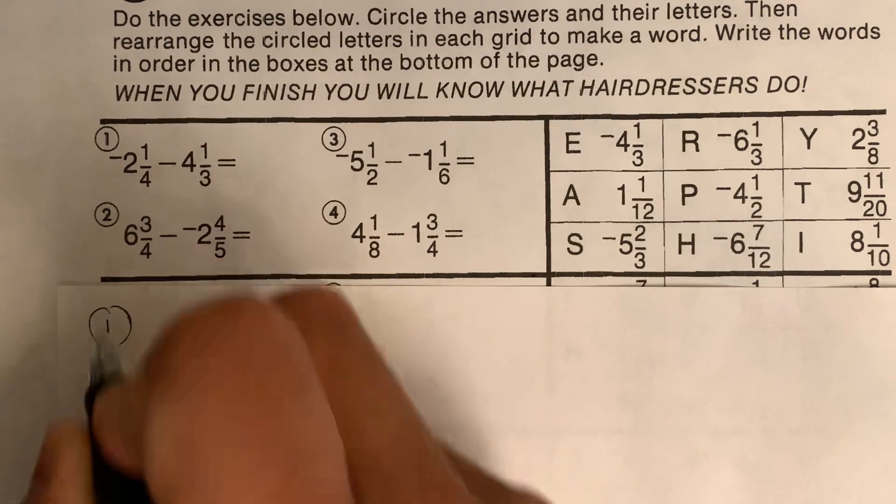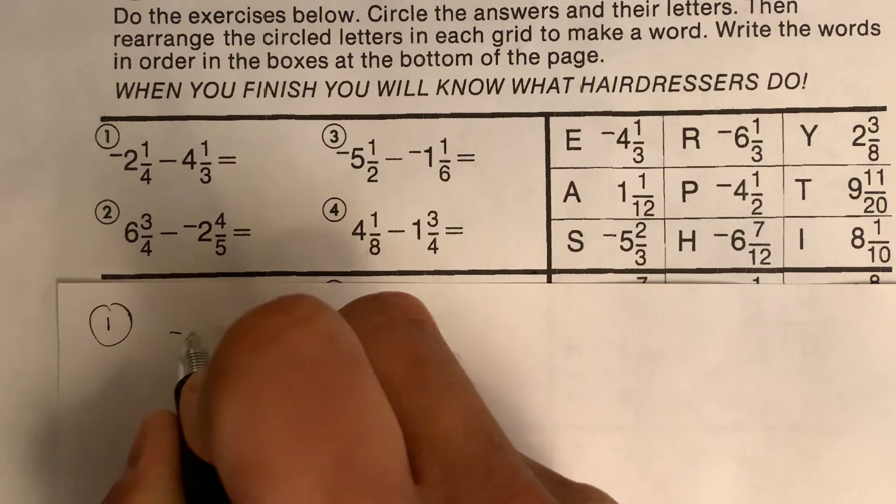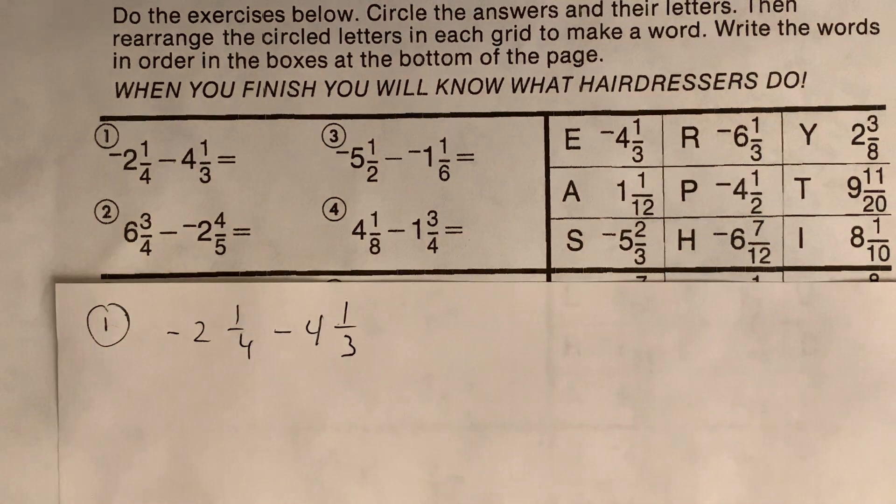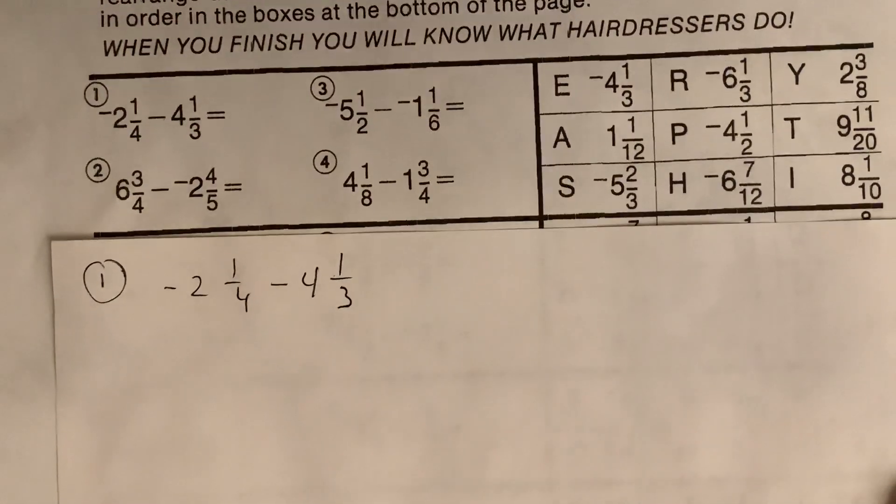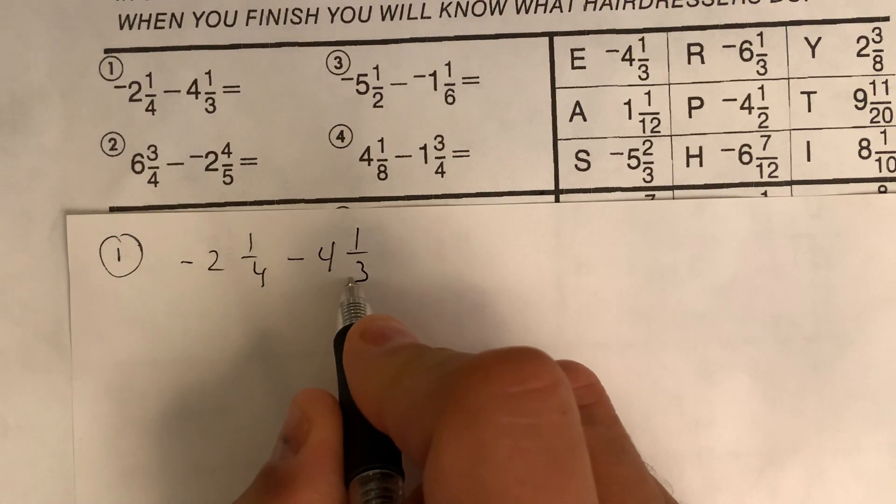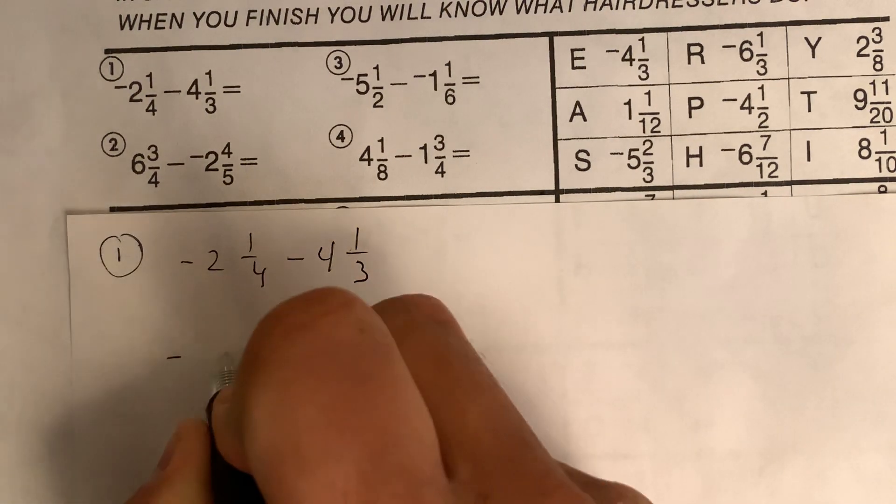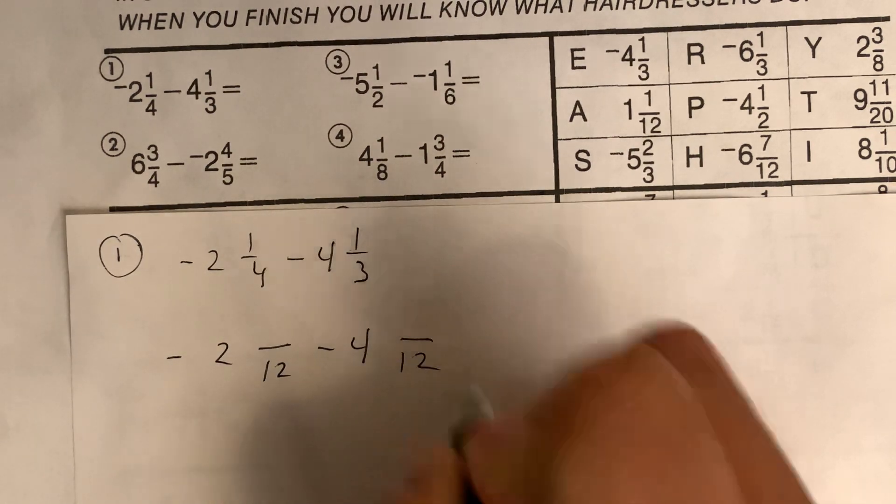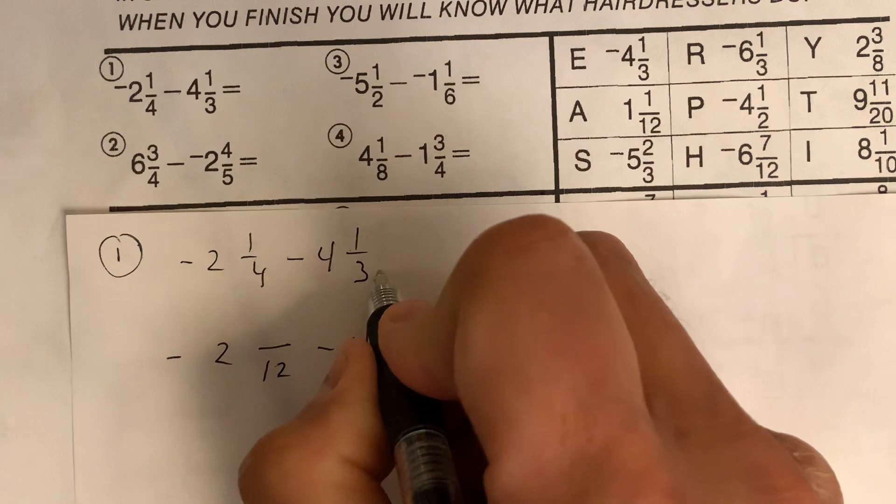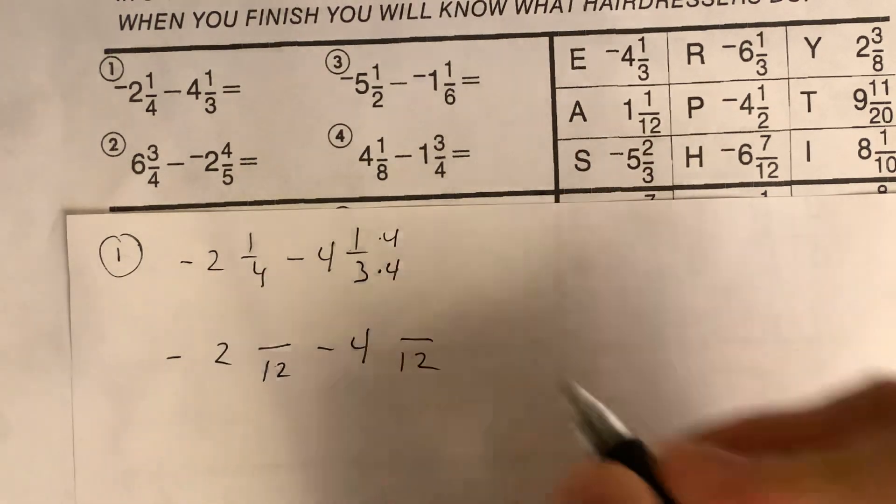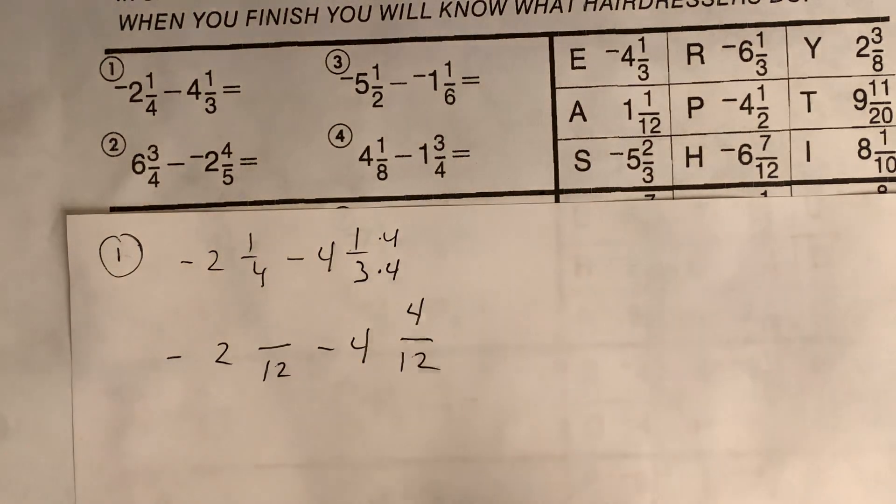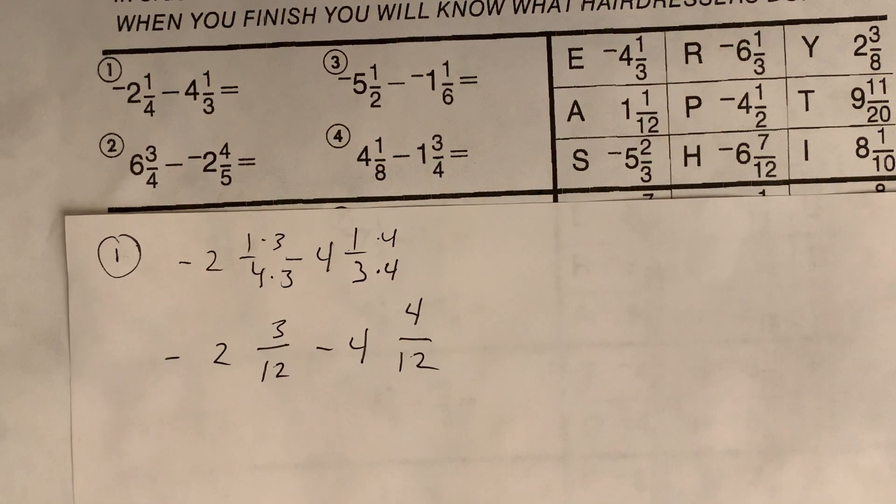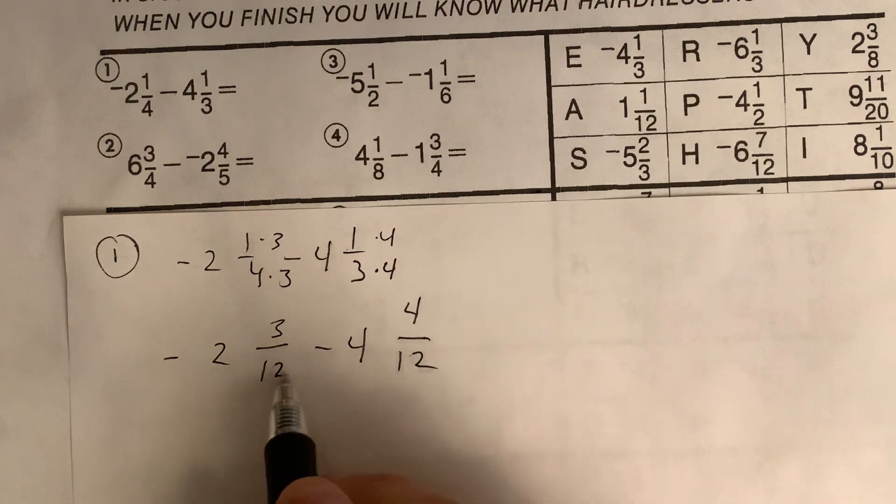So number one is negative two and a fourth minus four and a third. We're going to subtract these two. To do that, we need common denominators. So four and three common denominator is 12. So I'm going to go negative two and so many twelfths minus four and so many twelfths. So three times four is 12. So one times four is four. Four times three. One times three.